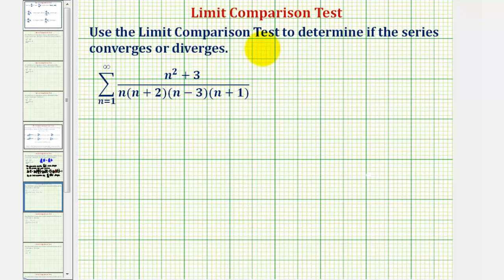We're asked to use the limit comparison test to determine if the infinite series converges or diverges. We'll begin by determining what infinite series the given series resembles. Notice how the numerator is degree two. If we multiplied out the denominator, it would be degree four.